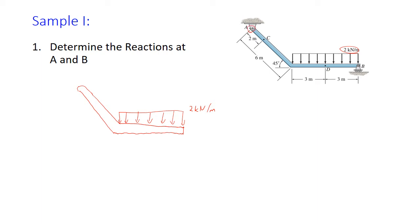We also need to include the reactions. At A we have a pin connection, and the pin connection allows rotation but does not allow any translation. So we'll include a vertical component Ay and a horizontal component Ax. Our final force is the roller connection at B, which has just a vertical component normal to the surface — we'll call this By. Since we're not given any information about the mass of the bar, we will neglect weight.